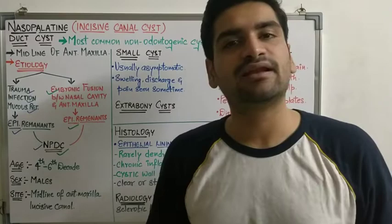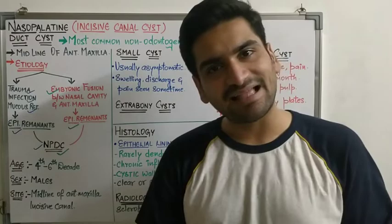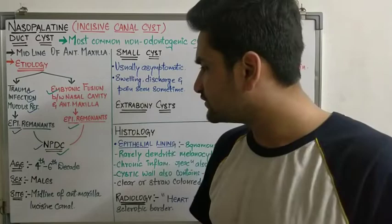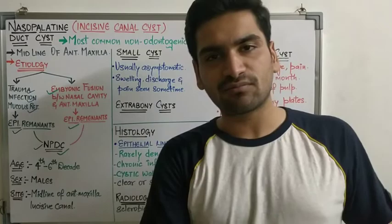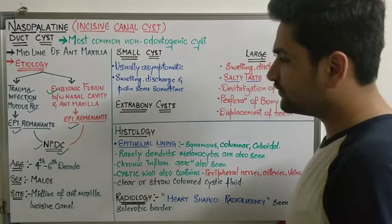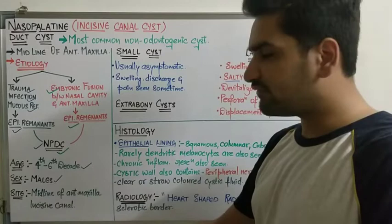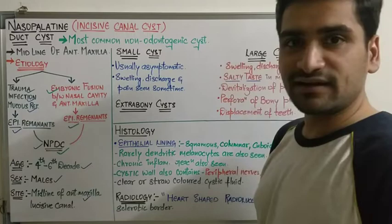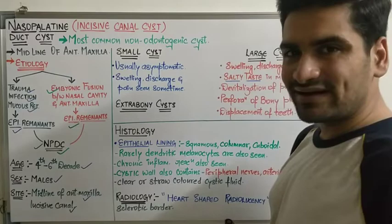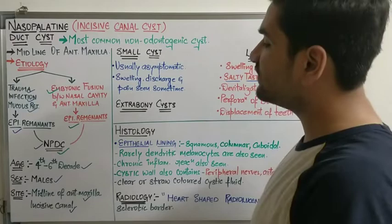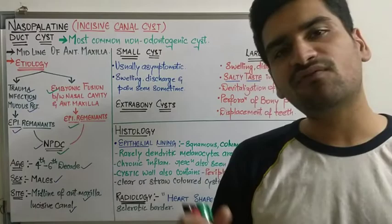When studying clinical features in oral pathology, we should know the most common age, sex, and site, along with clinical presentation, histology, and radiology. Regarding age, various cases are seen from childhood till 80 years, but most cases are seen in the fourth to sixth decade of life. Males are more commonly and more frequently affected compared to females. The site is the midline of the anterior maxilla, also called the nasopalatine or incisive canal.